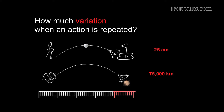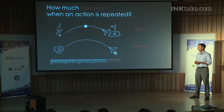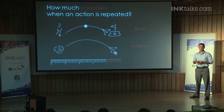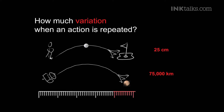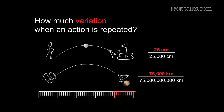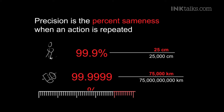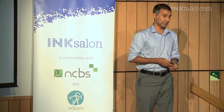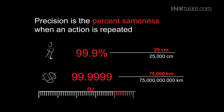At a completely different scale, we have the New Horizons probe, which recently made headlines because it reached Pluto. When the probe reached somewhere near Pluto, it turned on its radio and wired back to Earth saying this is where I am — and it was 75,000 kilometers off from where it was supposed to be. So which one is more precise? You can't really answer that until you realize precision has to do not just with the variation, but with the size of the baseline. I want to define precision as the percent sameness when an action is repeated. The professional golfer has 99.9% precision, but the New Horizons space probe has 99.9999% precision — one in a million. That's precision.